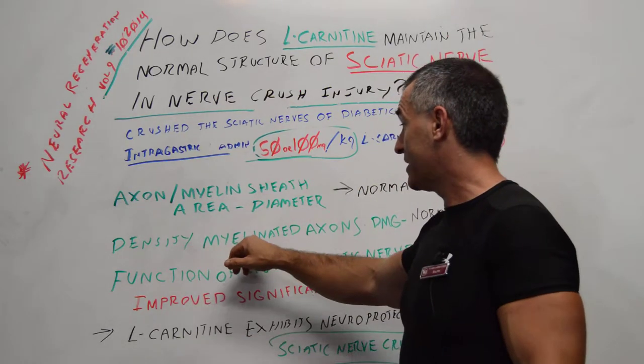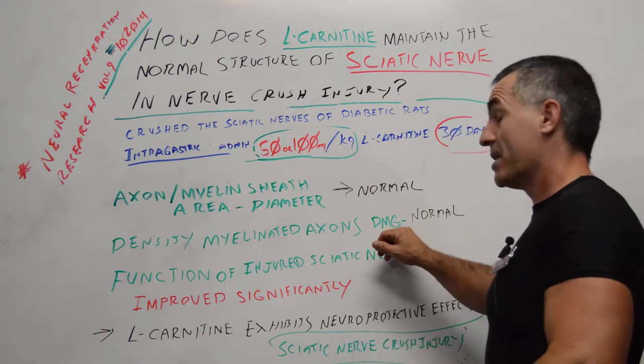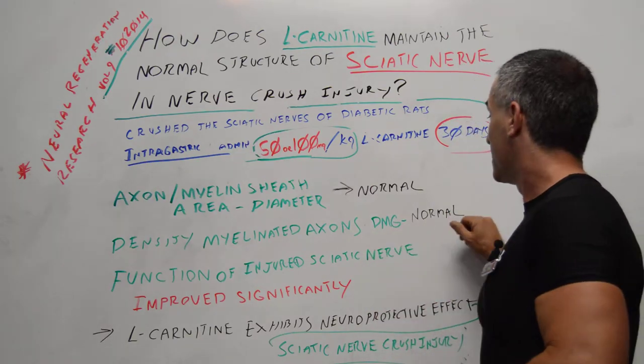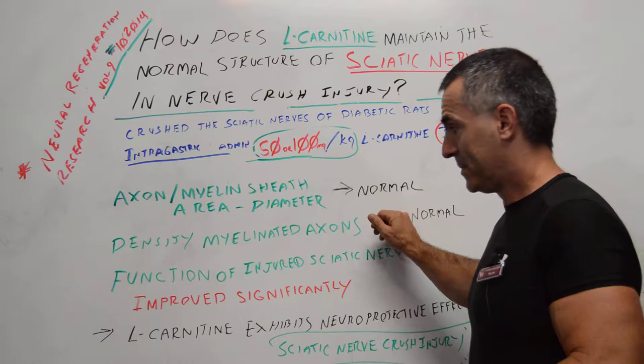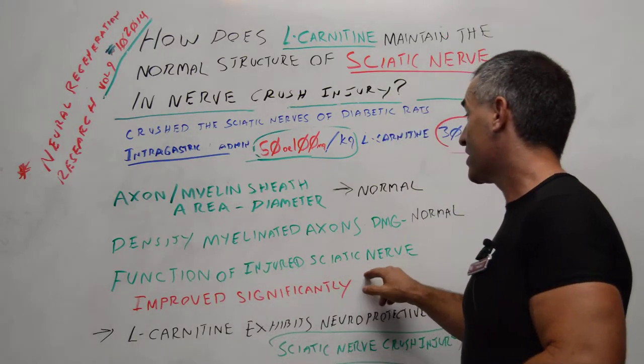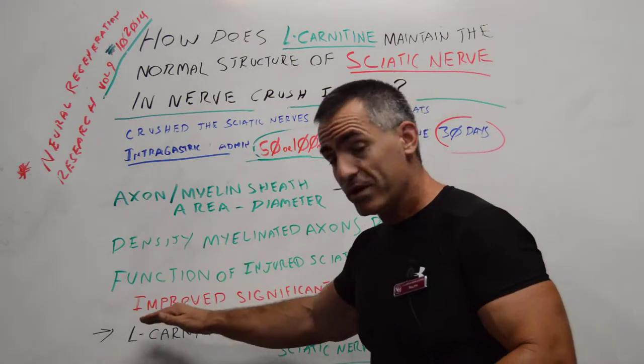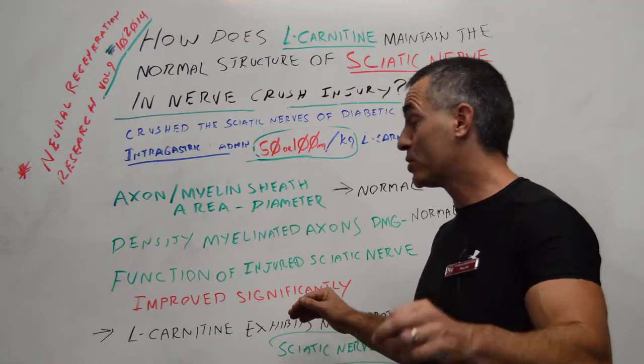The density of the myelinated axons itself, again the area that was crushed after 30 days, returned to normal. The function of the injured sciatic nerve itself after the traumatic injury improved significantly in the researcher's terms.